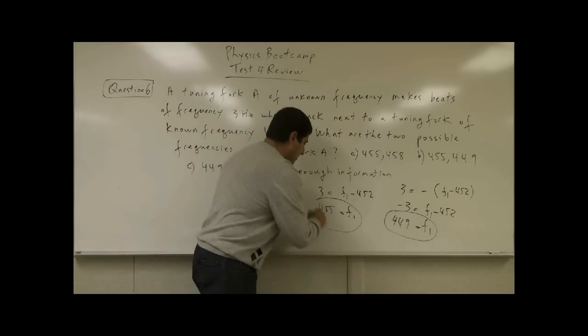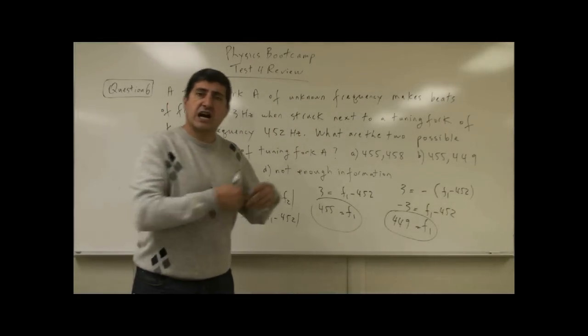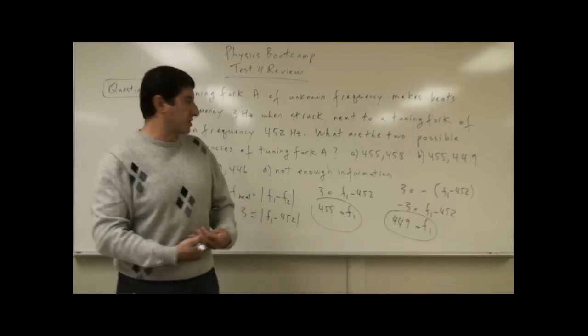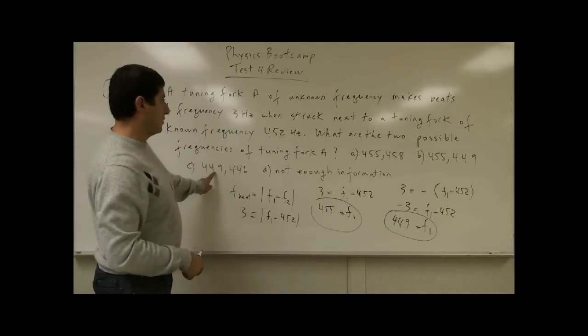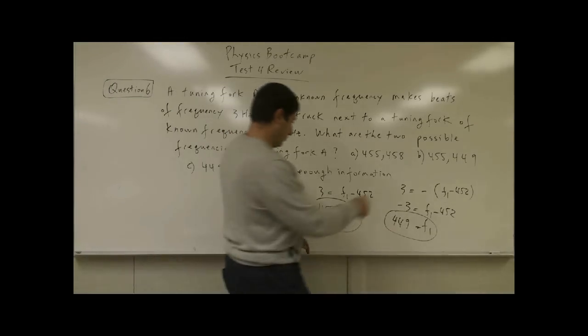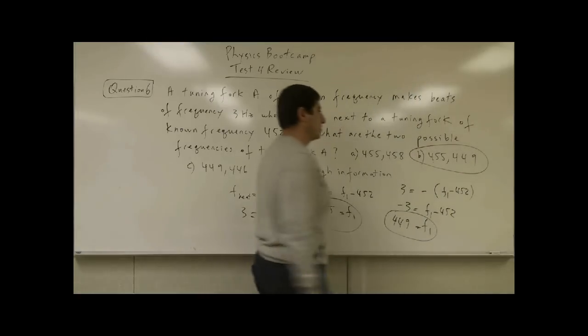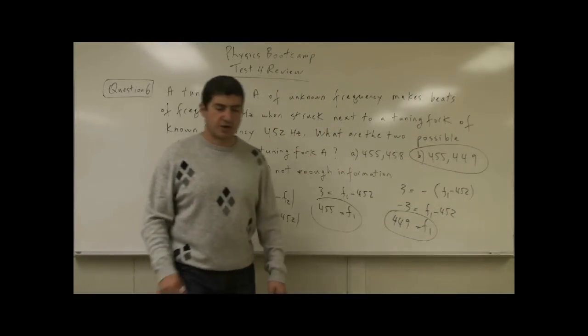Simply said, tuning fork A can either be 3 Hertz higher than tuning fork B or 3 Hertz lower. So 455 and 449, and which choice is that? 455 and 449, the choice is B. Thank you.